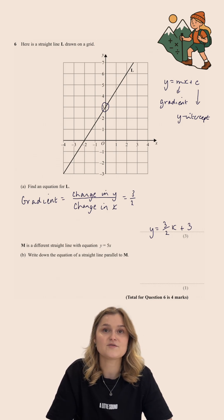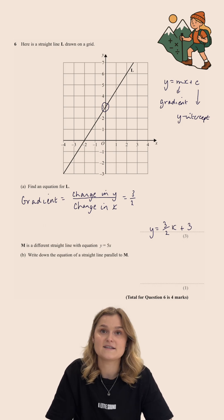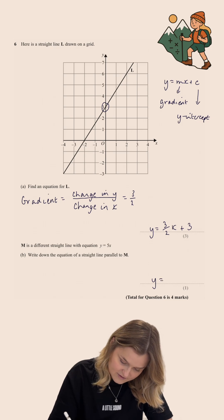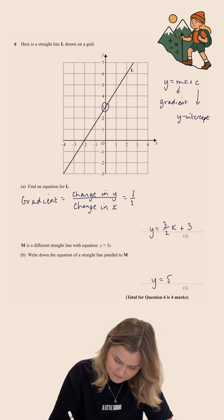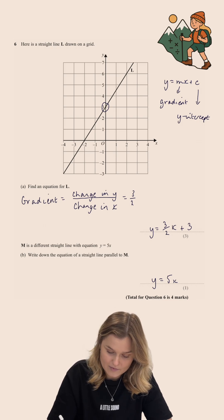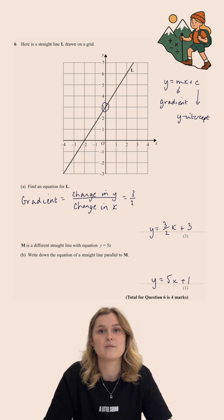Now, parallel lines always have the same gradient, but the Y-intercepts are different. So, the equation of a line parallel to this, as long as we start it with Y equals 5X, we can put plus or minus any number on the end, so I'm just going to go for plus 1.